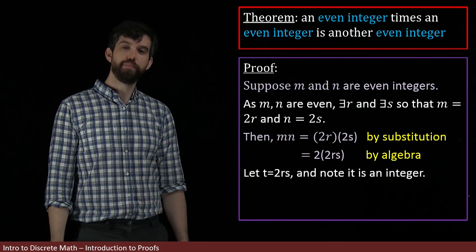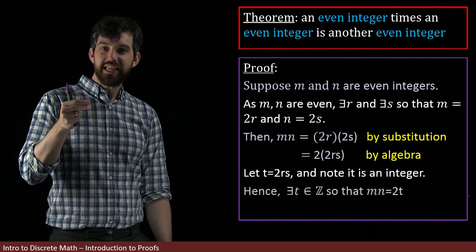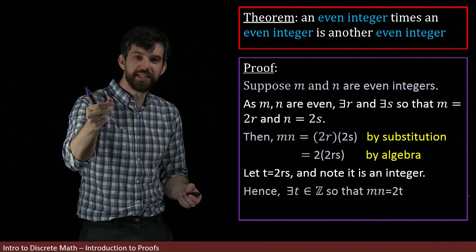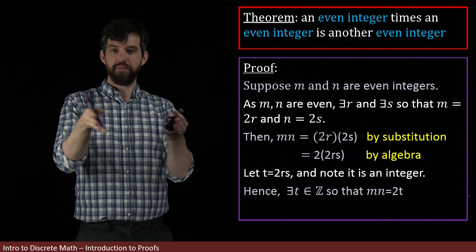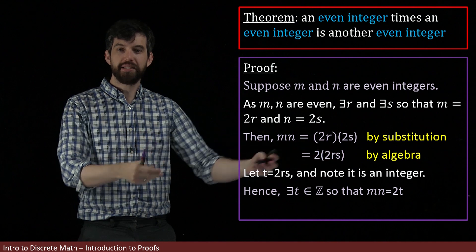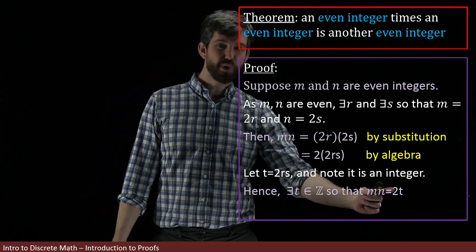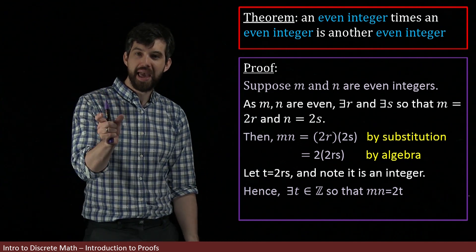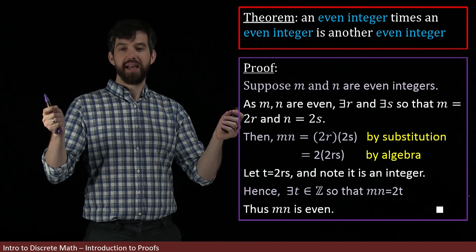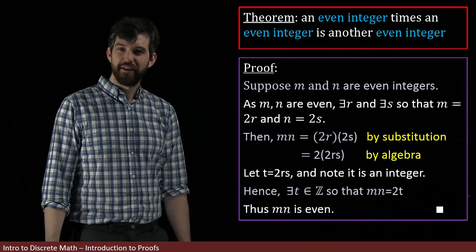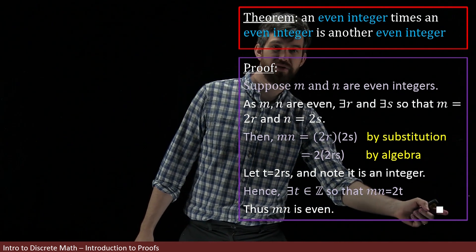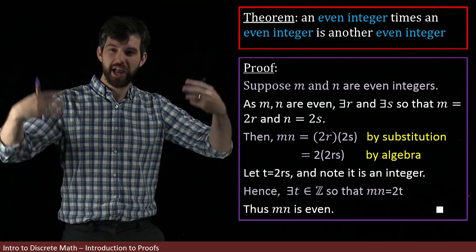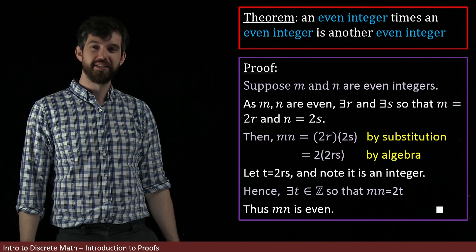To lock out my proof, I need to give the 'something' a specific name and note that it is an integer. So I say: let t equal 2rs. That t is our existence claim — remember in our definition of even integer, there existed some t in the integers so that whatever you had was twice it. There exists a t so that the product is twice that. And the definition of this is that mn is an even integer. So I write 'thus mn is an even integer,' and I finish off my proof by putting this little square symbol, which stands for QED — voilà, we have successfully proven what we set out to prove.